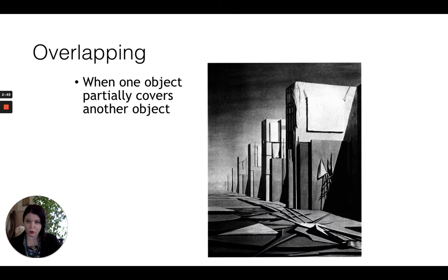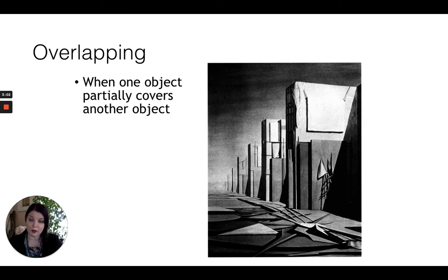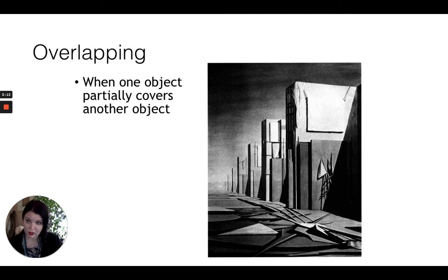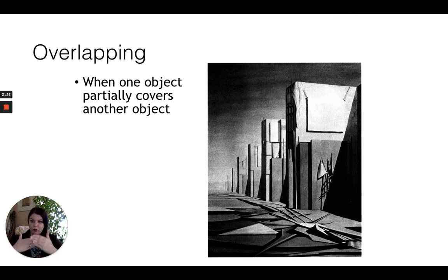One of the things that contributes to a convincing illusion — a convincing perspective of depth on a two dimensional surface — is overlapping, when we have one object that partially covers another object. This is something you've already been thinking about this semester when you did your landscapes on plein air, looking at how different trees and bushes were in front of one another. We talked about sighting, measuring, and mapping, and about form and value. This is not a new concept, but we're going to think about it as one of our tools to creating accurate and compelling perspective.